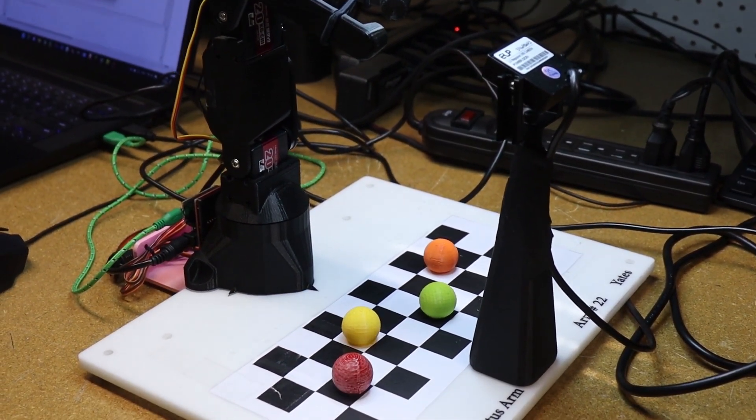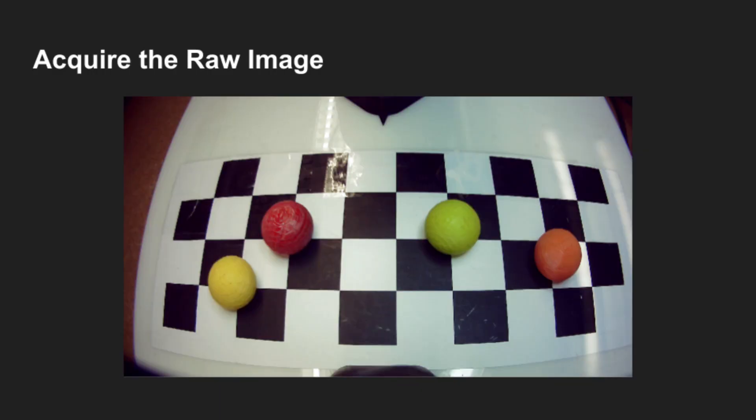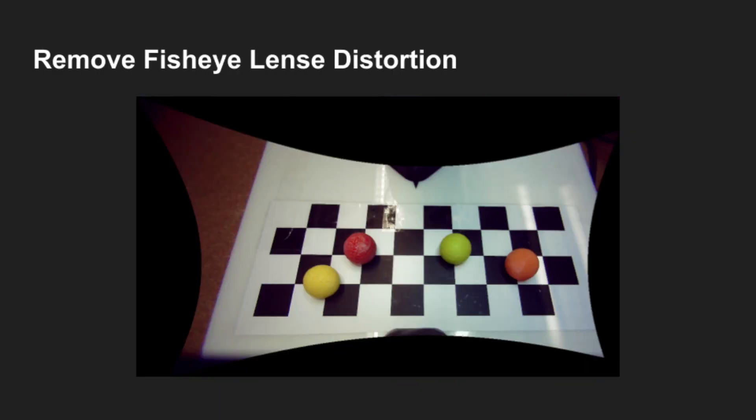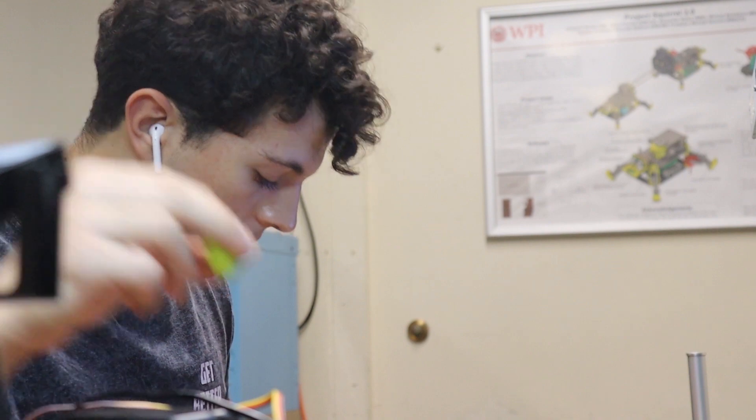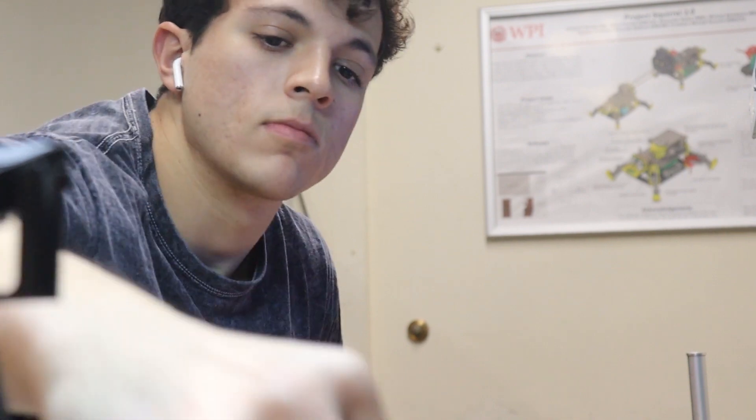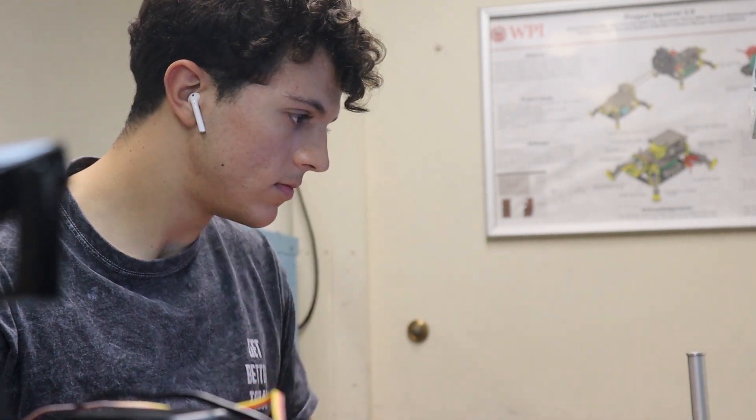The computer vision pipeline is as such. First, the raw image is acquired from the webcam. Next, the fisheye lens distortion is removed such that the lines of the checkerboard are straight. This is important because each line segment of the checkerboard represents 25 millimeters within the robot's workspace.